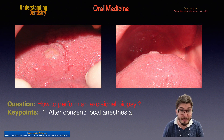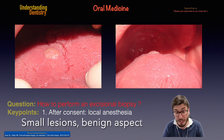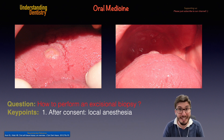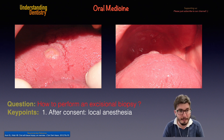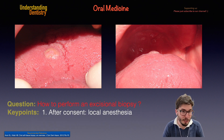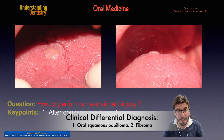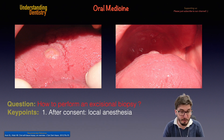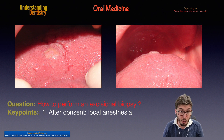Before we begin, we need to understand when to perform the excisional biopsy. This is the procedure you want to perform on small lesions — up to one centimeter — and lesions that look benign, not malignant. Here we have one of my clinical cases: a lesion with color similar to the mucosa but heterogeneous, with a rough appearance. My clinical diagnosis at that time was first papilloma and then fibroma as the differential diagnosis. We still don't know at this point if the lesion is pedunculated or not.